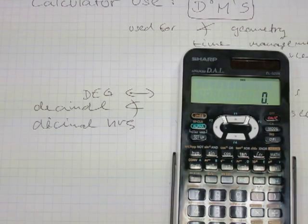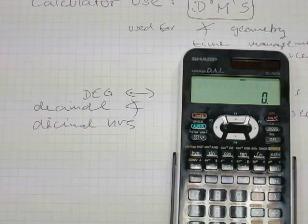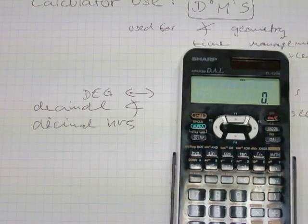With the function printed above the calculator's DMS button, you can convert from degrees, minutes, and seconds to decimal degrees, or if your numbers are hours, minutes, and seconds, it will convert it to decimal hours.